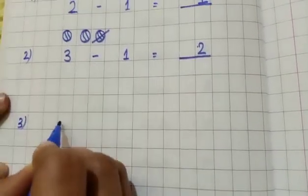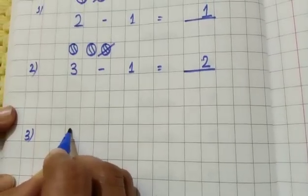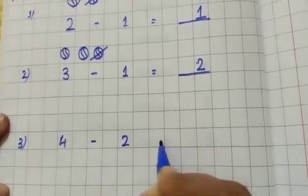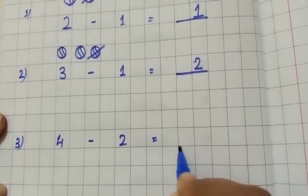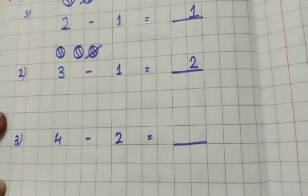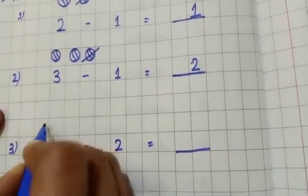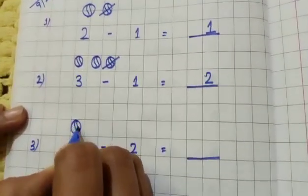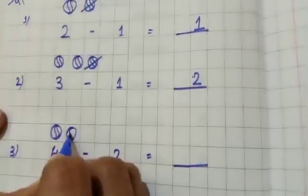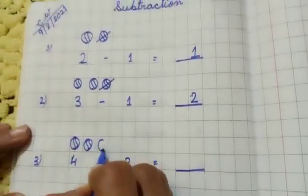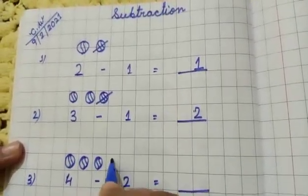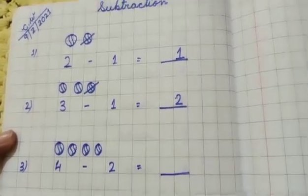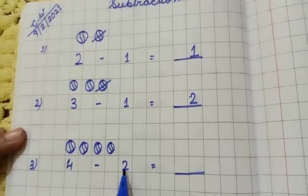Number three is 4 minus 2 equal to dash. Okay, here again I am drawing four balls, small small balls, okay. One, two, three, four. Four balls, okay.